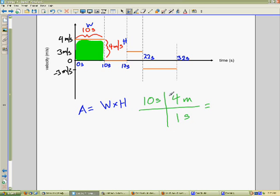I have 10 times 4, which is 40, divided by 1 equals 40.